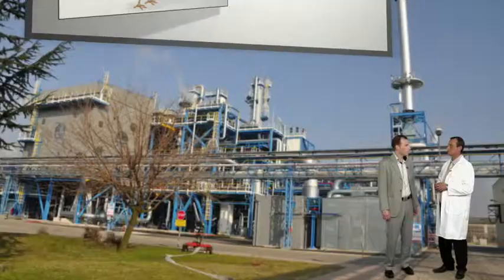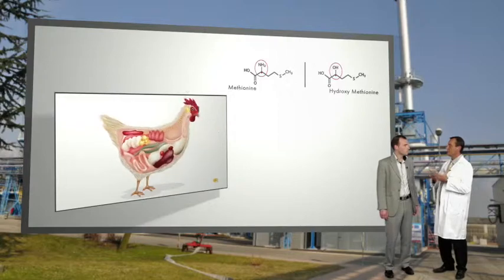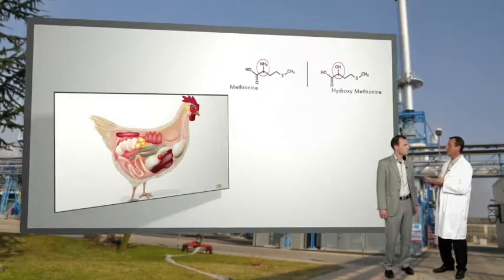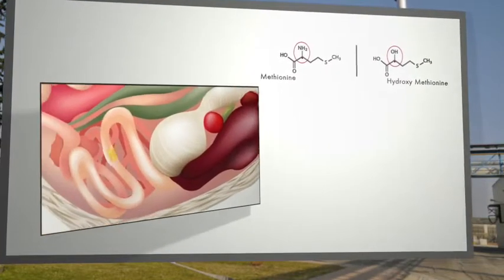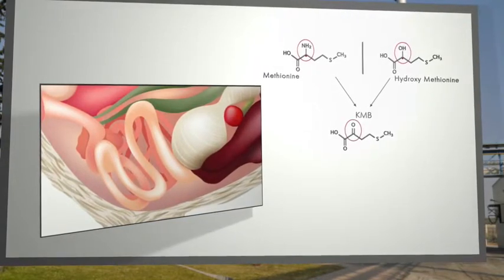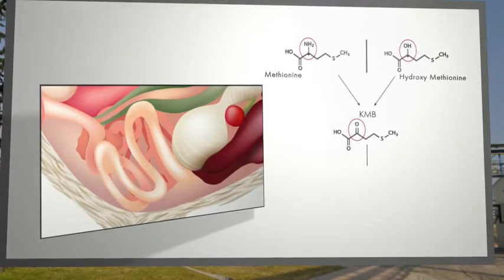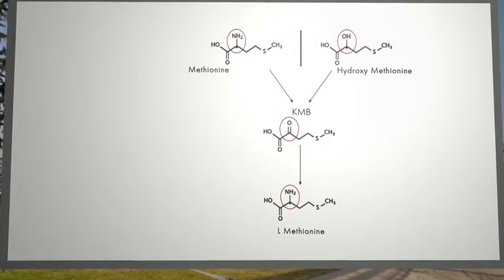DL-methionine and DL-hydroxymethionine are both transformed in the body to be assimilated and used in different metabolic cycles. How does this transformation take place? The hydroxy and amino groups are replaced in the body by a ketone group. The asymmetry disappears and an intermediate KMB is produced, which is then transformed into L-methionine by replacing the ketone group with an amino group.